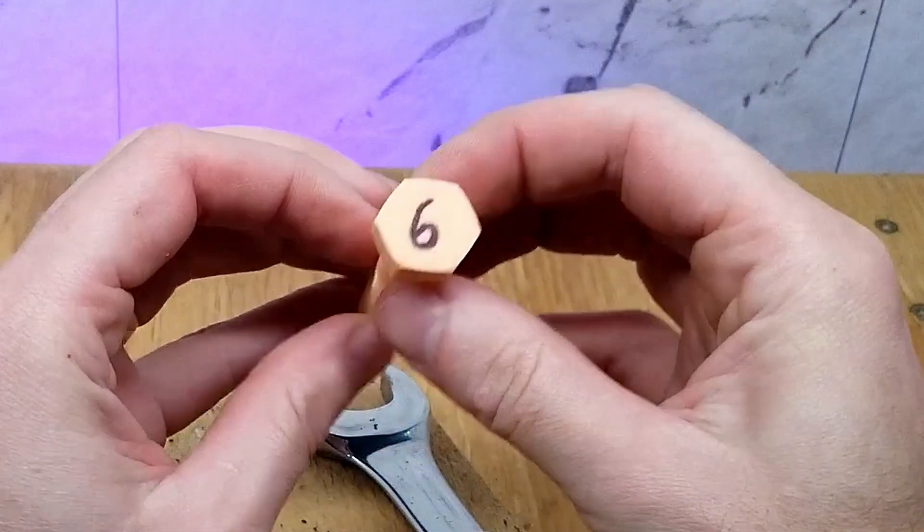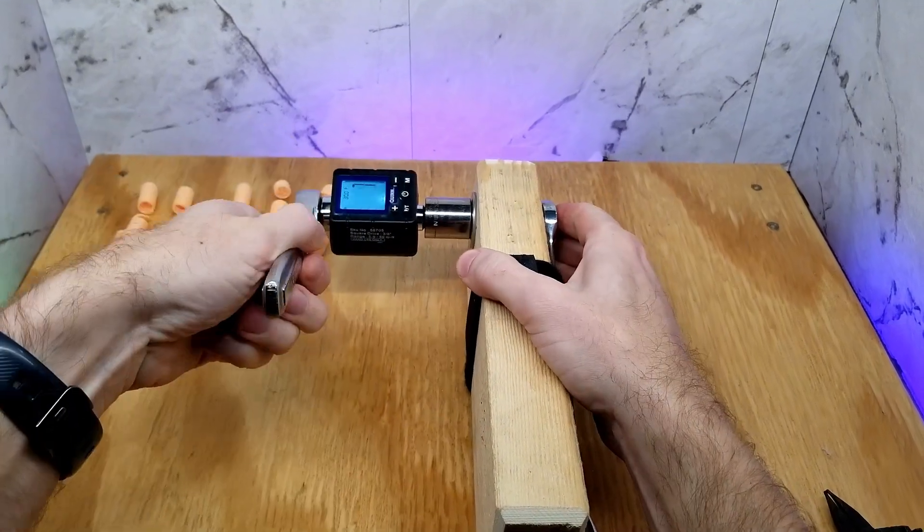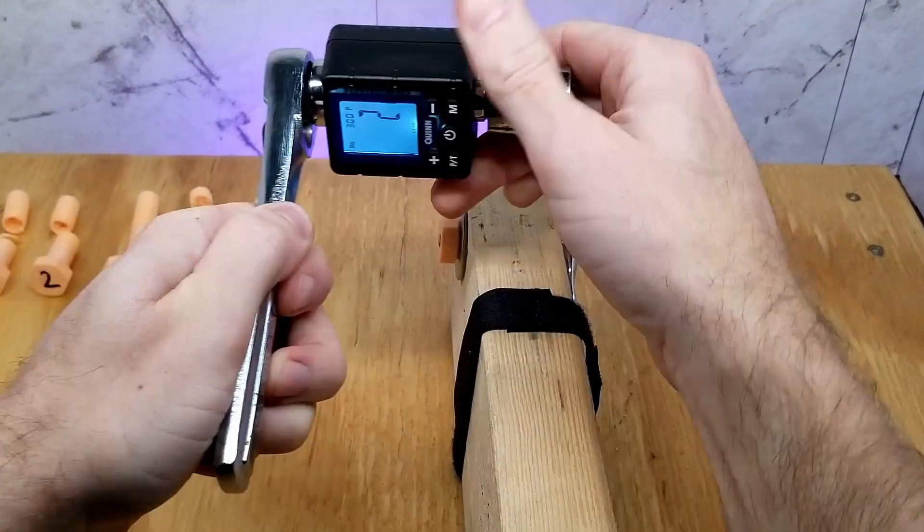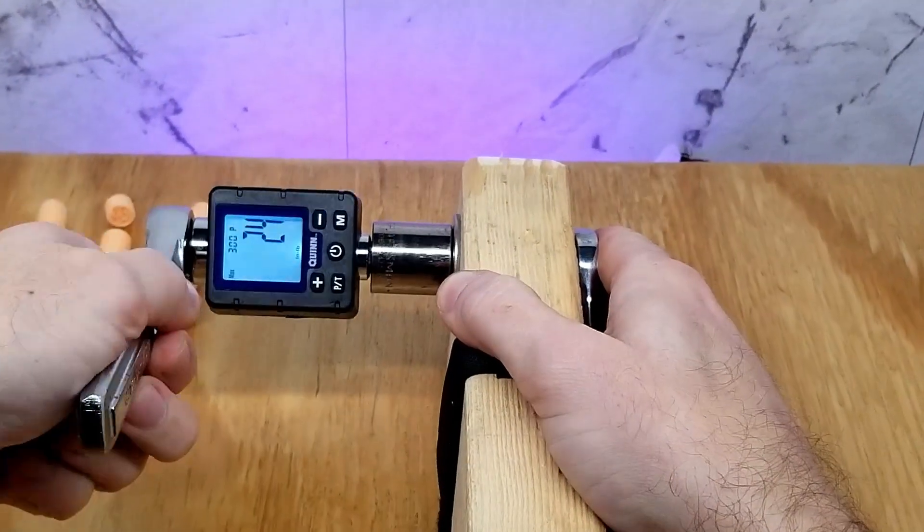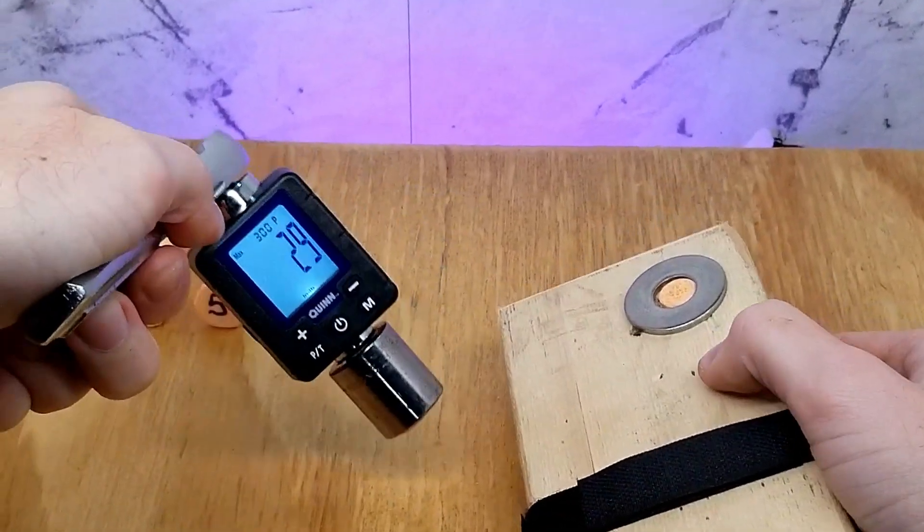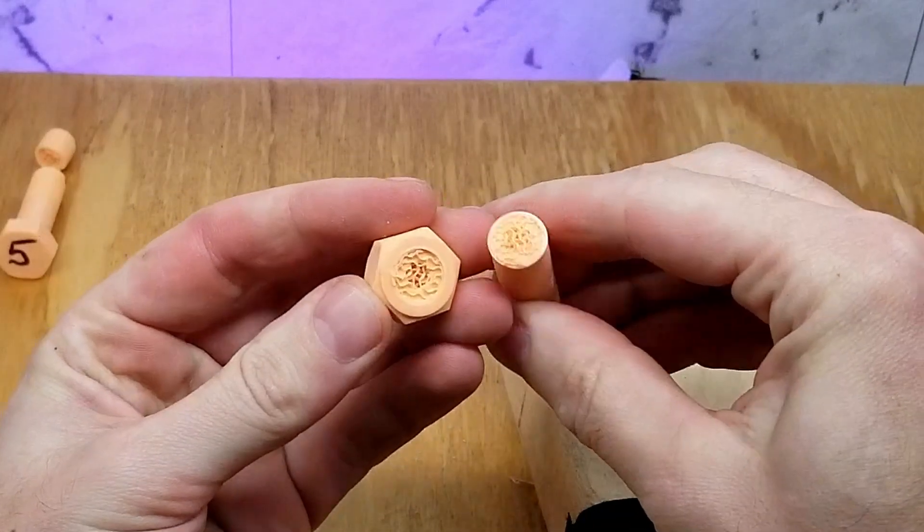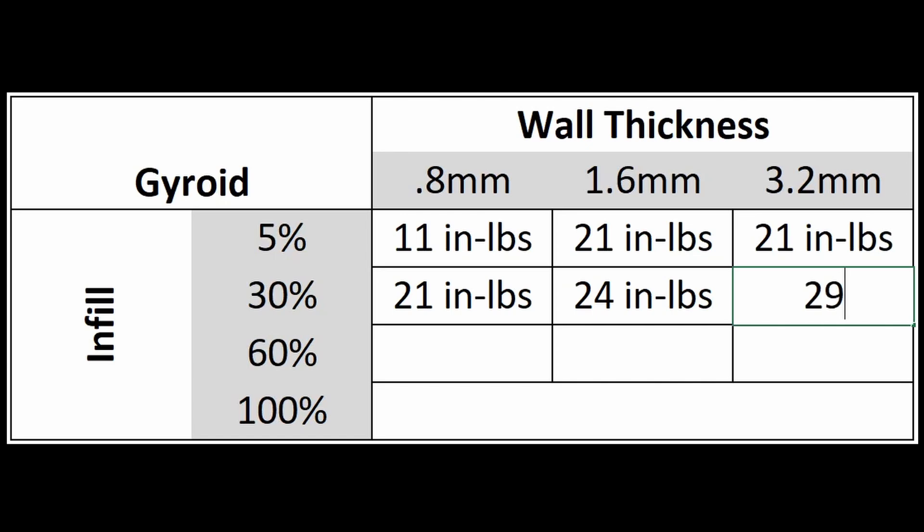This one is the thickest wall at 3.2 millimeters and a 30% infill. This one broke at 29 inch pounds and another one right below the head too. Anyways, I'm going to record this one at 29 inch pounds for now when it looks like the 3.2 wall thicknesses are giving problems.